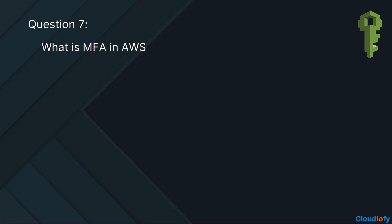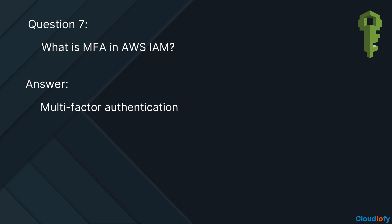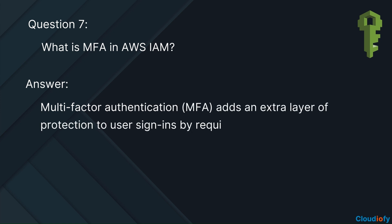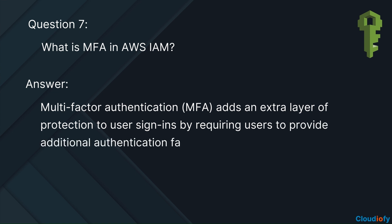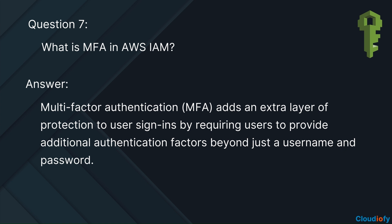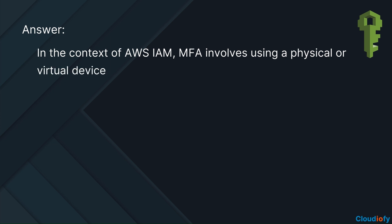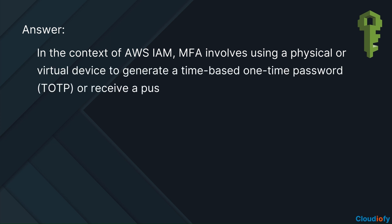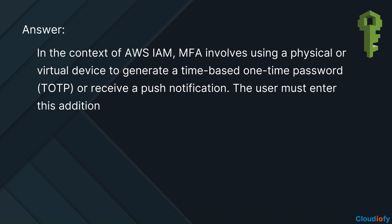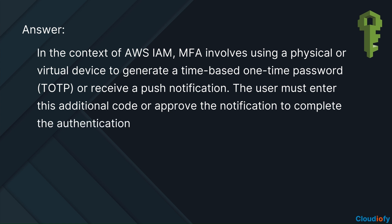What is MFA in AWS IAM? Multi-factor authentication (MFA) adds an extra layer of protection to user sign-ins by requiring users to provide additional authentication factors beyond just a username and password. In the context of AWS IAM, MFA involves using a physical or virtual device to generate a time-based one-time password (TOTP) or receive a push notification. The user must enter this additional code or approve the notification to complete the authentication process.